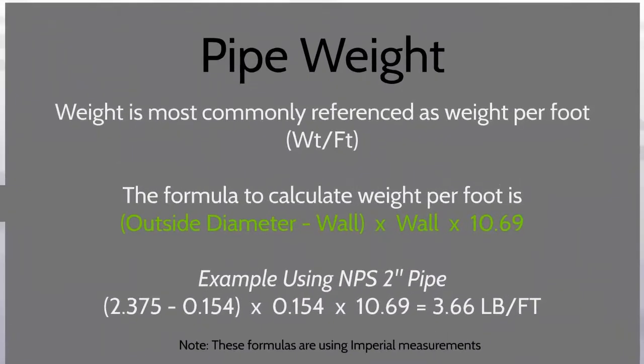Pipe weight is most commonly referenced as weight per foot. The formula to calculate weight per foot is: outside diameter minus wall, times the wall, times 10.69.